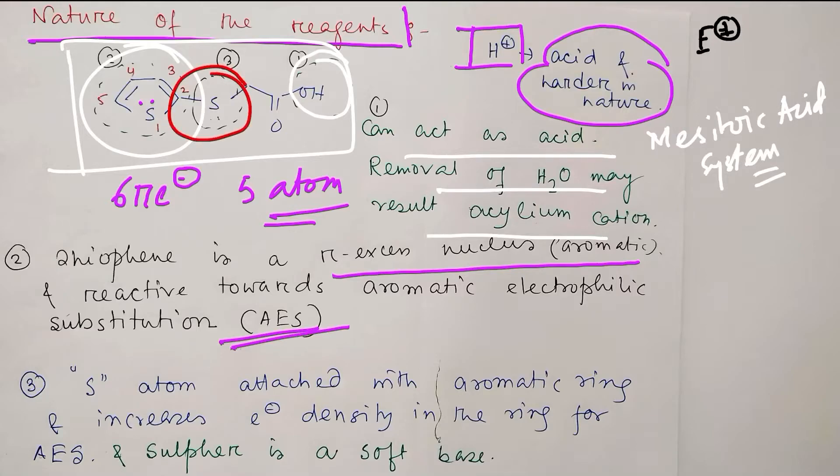And another thing, the third point is the sulfur. This sulfur attached to aromatic ring is actually an activating group. So it will increase the electron density in the ring for AES, means aromatic electrophilic substitution.